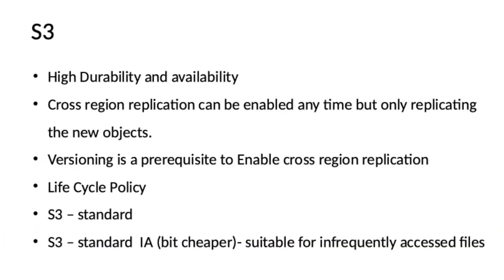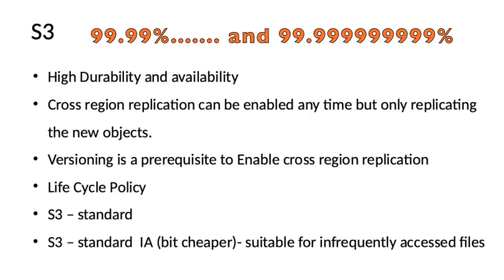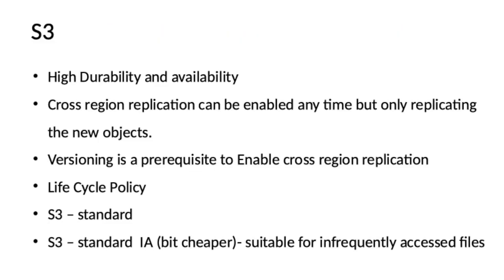Amazon S3 is highly durable and available by itself. Amazon S3 guarantees four nines availability and eleven nines durability — 99.99% availability and 99.999999999% durability. Cross-region replication can be enabled at any time. But if you already had some objects in a bucket when you enable cross-region replication, only newly added objects will be replicated. Another important thing to remember is versioning is a prerequisite for enabling cross-region replication.